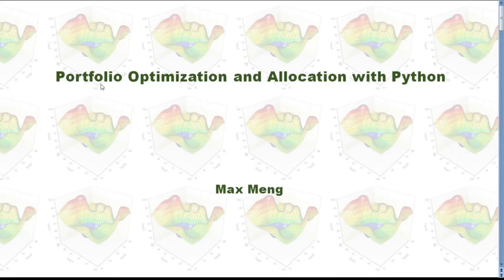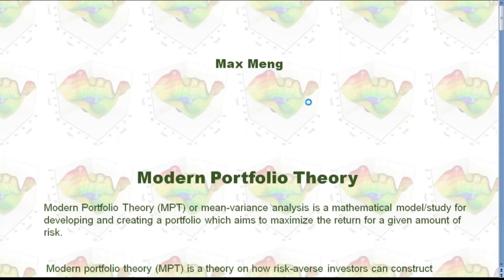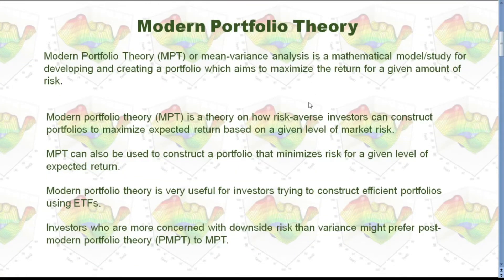This time I'm going to talk about how to perform portfolio optimization and allocation with Python. We use modern portfolio theory in this video. Modern portfolio theory, or mean-variance analysis, is a mathematical model for developing and creating a portfolio with aims to maximize the return for a given amount of risk.